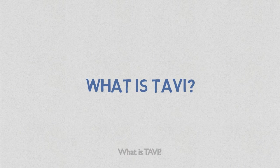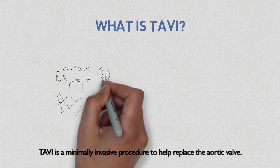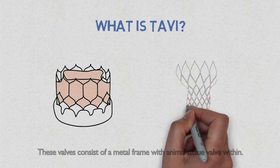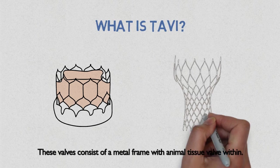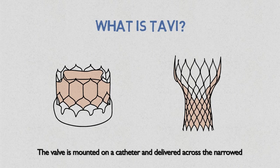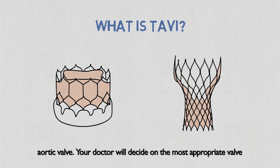What is TAVI? TAVI is a minimally invasive procedure to help replace the aortic valve. These valves consist of a metal frame with animal tissue valve within. The valve is mounted on a catheter and delivered across the narrow aortic valve. Your doctor will decide on the most appropriate valve depending on your condition.